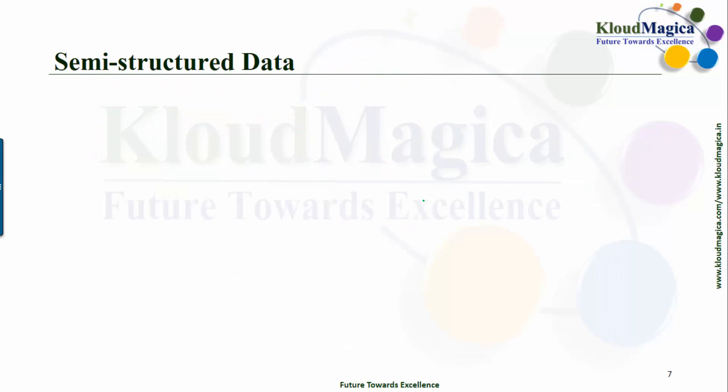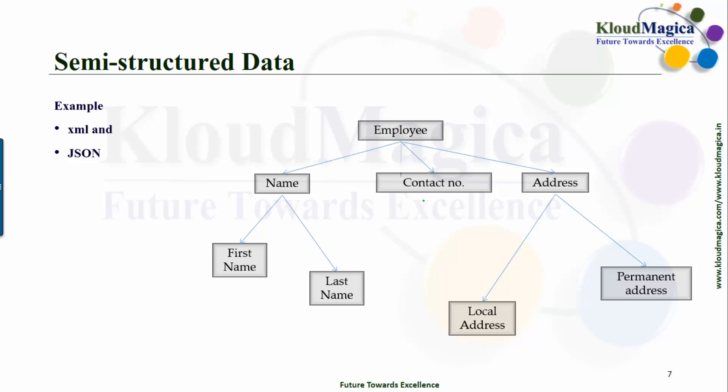So let's see what is semi-structured data. Apart from structured and unstructured data, we also have a third category and that is semi-structured data. Semi-structured data is basically information that does not sit in a relational database but that does have some organizational properties that make it easier to analyze. Example of semi-structured data might include XML, JSON, and NoSQL databases.